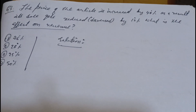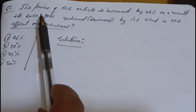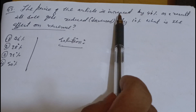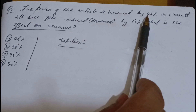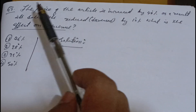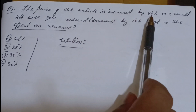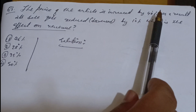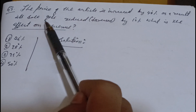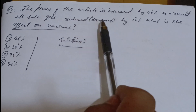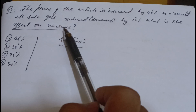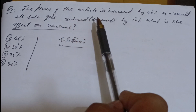Now let's go to question number 3. The price of an article is increased by 40 percent. As a result, its sale gets reduced — when the price of a commodity increases, demand in the market decreases, so the sale is reduced by 10 percent. What is the effect on revenue?